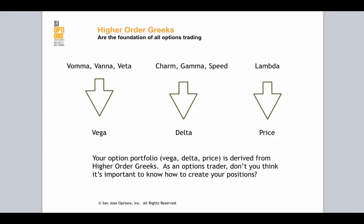So when you have a portfolio of options and you're trying to manage that portfolio against volatility shifts by managing your Vega, you can't actually do that effectively if you don't know how to use Vama, Vana, and Veda — because those are the actual Greeks that are used to manage your Vega.